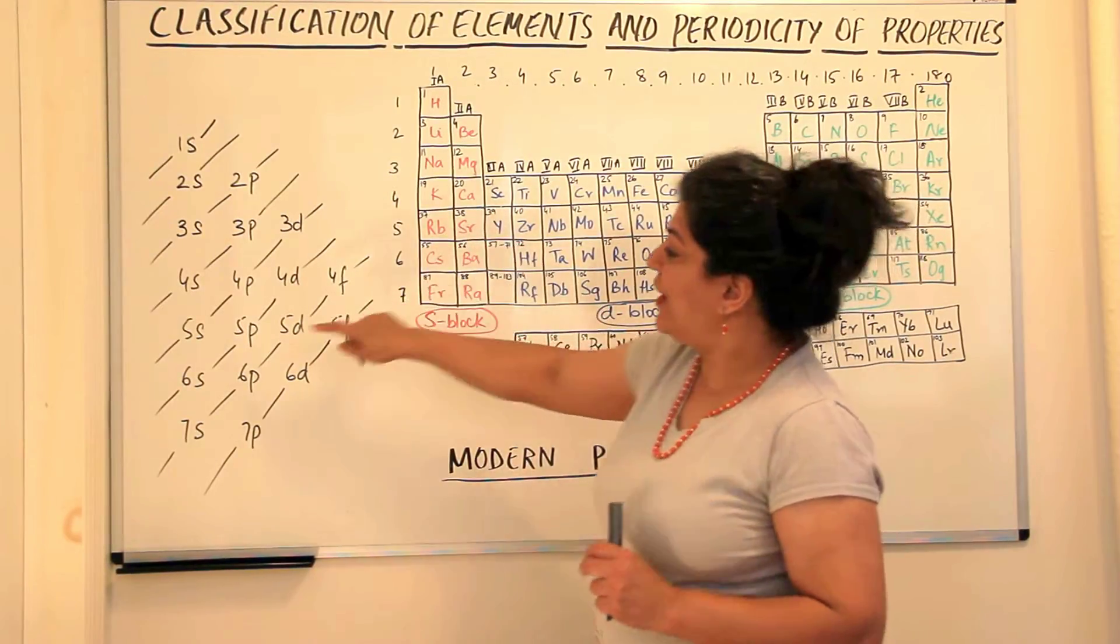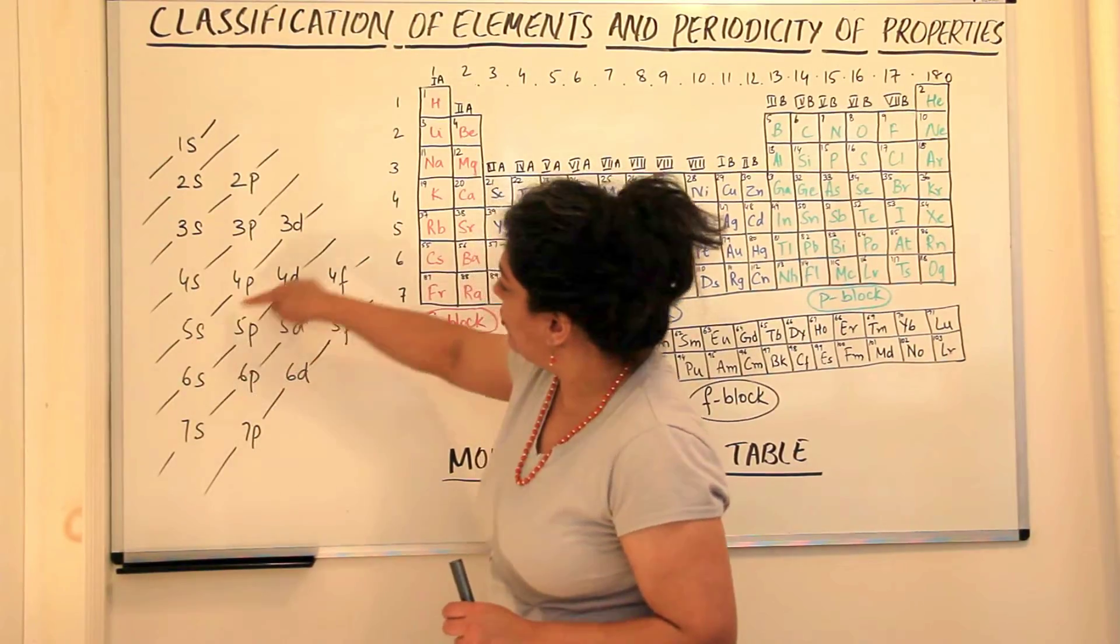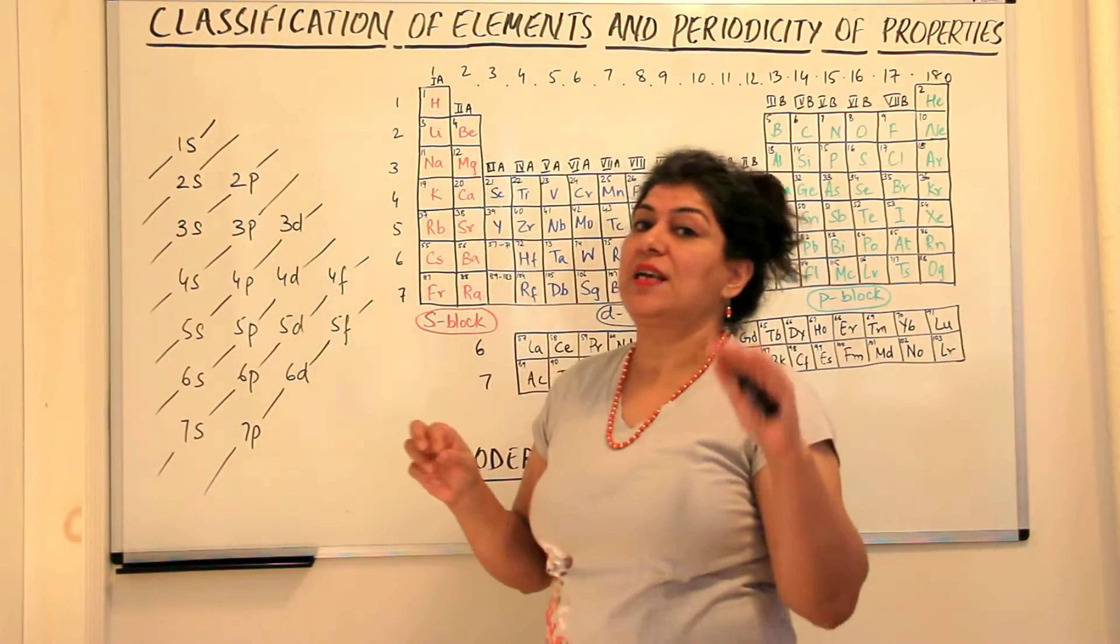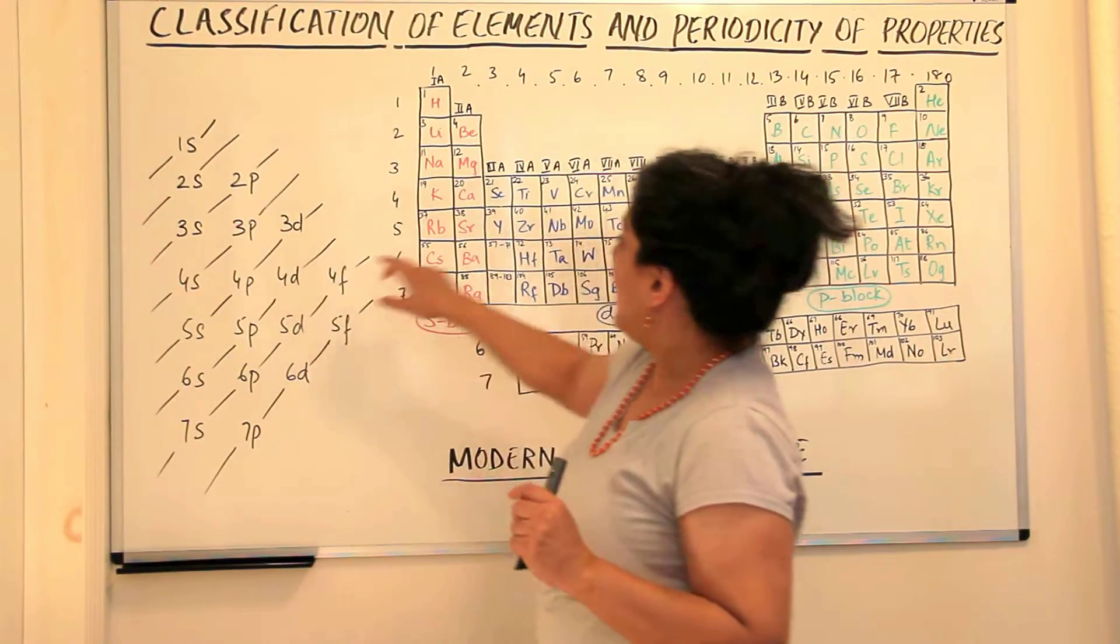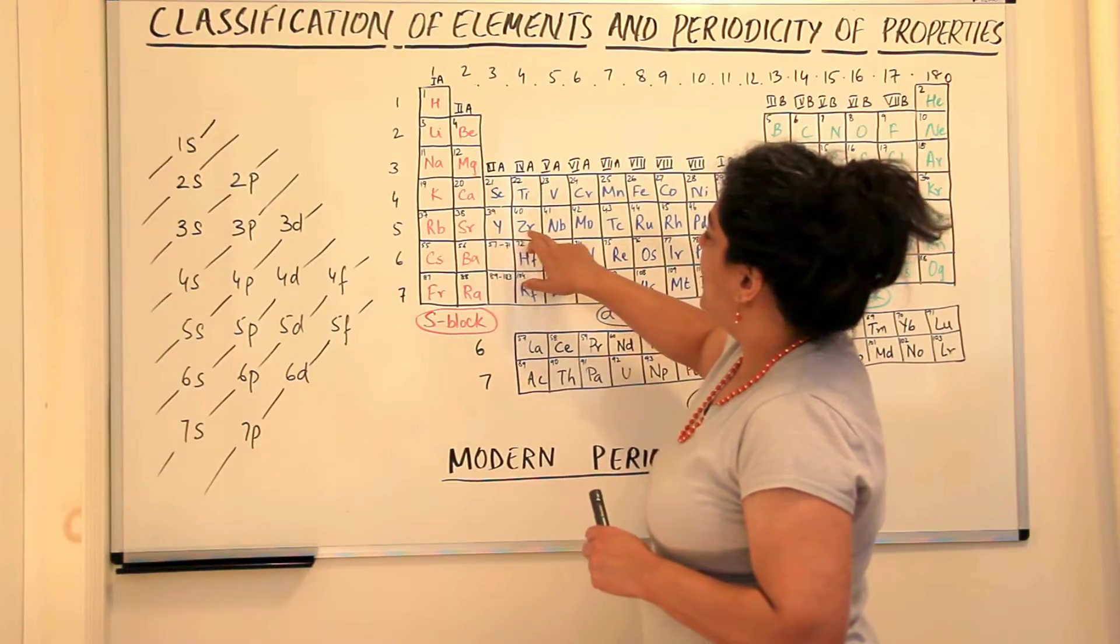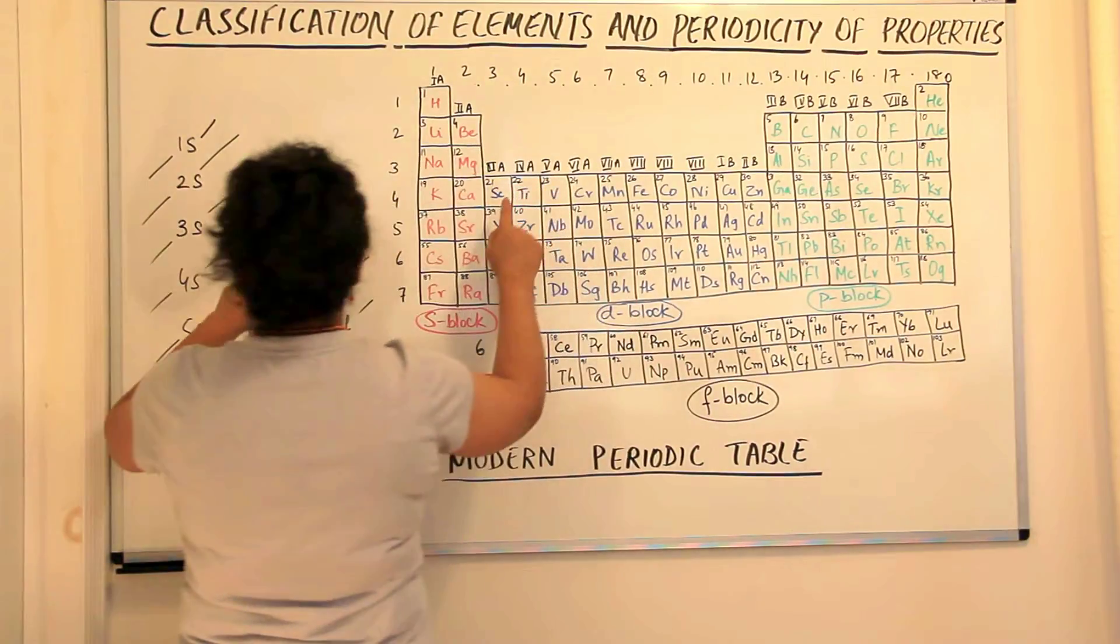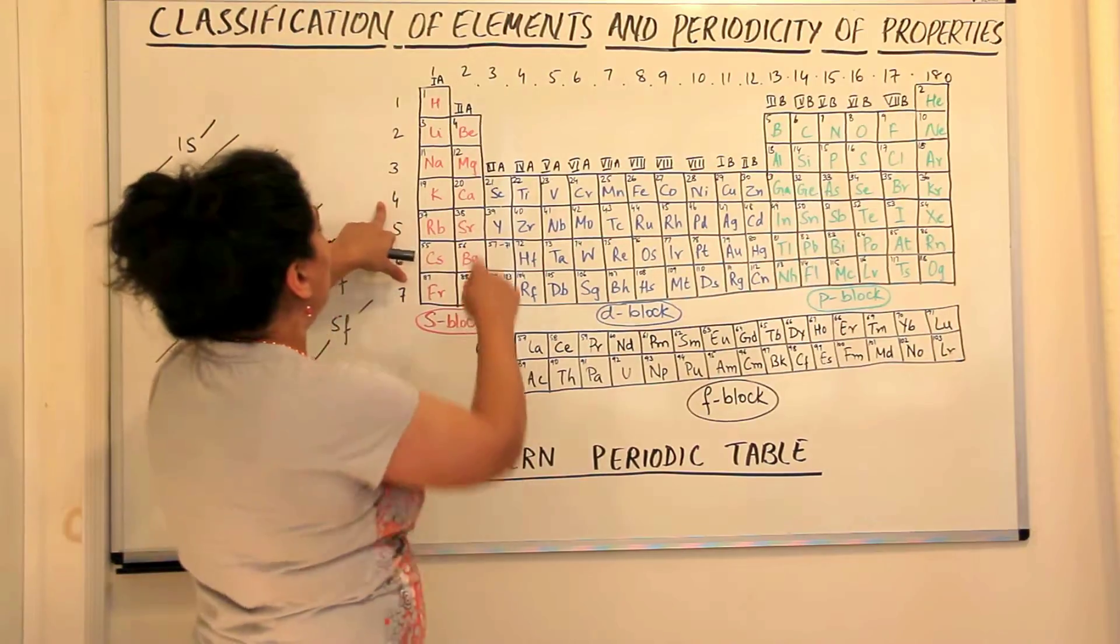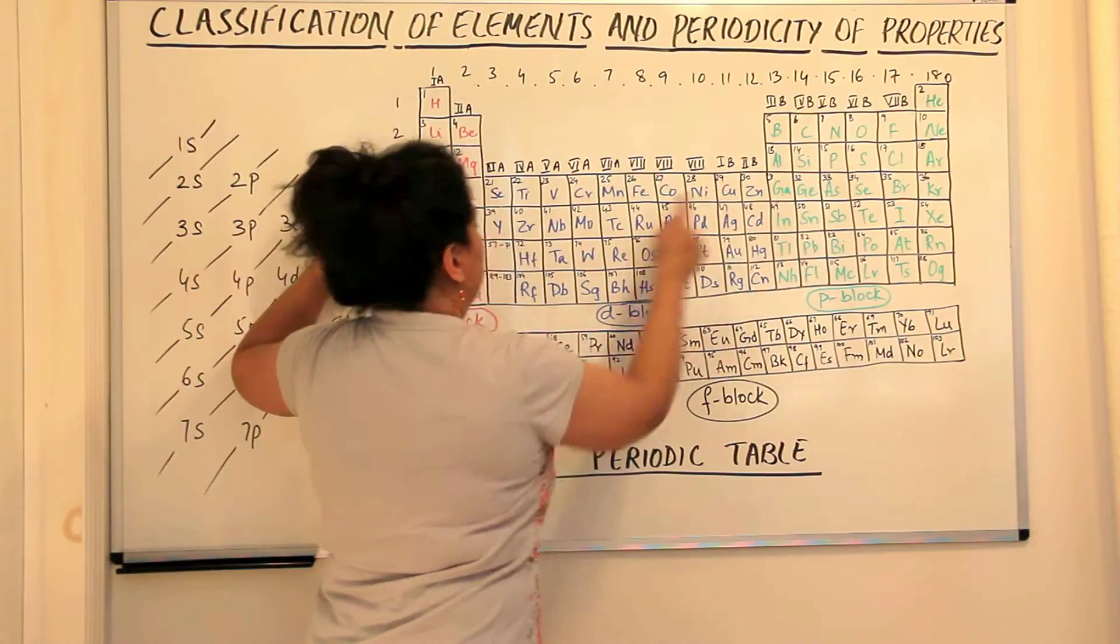Now after 5s is filled up, the next electron goes to 4d. So the d has 5 orbitals, so the next 10 electrons would go to 4d. Remember the d block elements, here it is not the 4d which is being filled up. After 4s, it is the 3d which fills up.